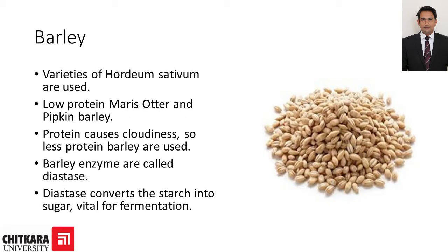Barley. Varieties of Hordeum sativum are used. Low protein, Maris Otter, and Pipkin barley are preferred. Protein causes cloudiness so less protein barley is used. Barley enzymes are called diastase — an enzyme which converts starch into sugar, and that is very vital for fermentation.